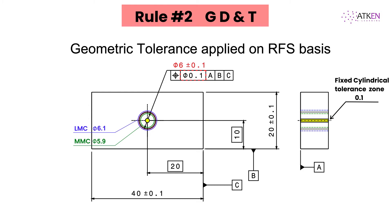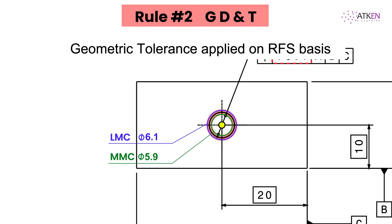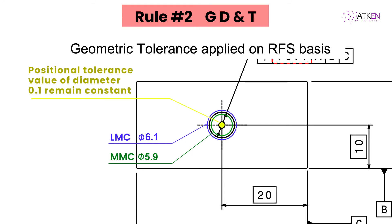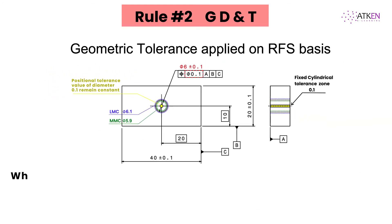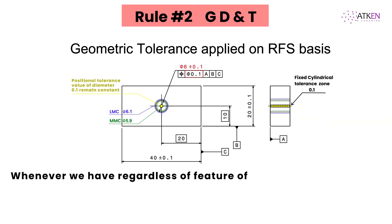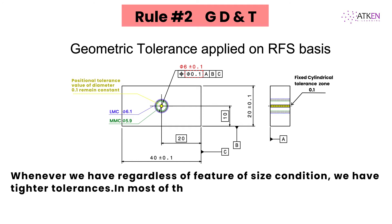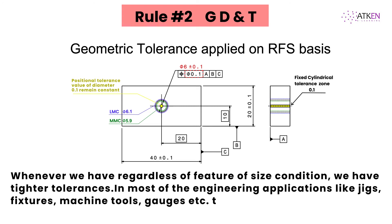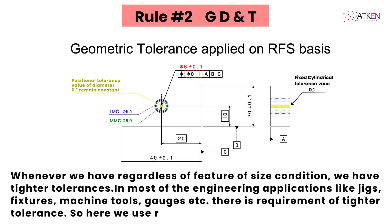The hole can be produced anywhere between diameter 5.9 and 6.1, but the positional tolerance value of diameter 0.1 remains constant. Whenever we have a Regardless of Feature Size condition, we have tighter tolerances. In engineering applications like jigs, fixtures, machine tools, and gauges, there is a requirement of tighter tolerance, so here we use Regardless of Feature Size.